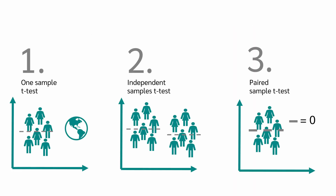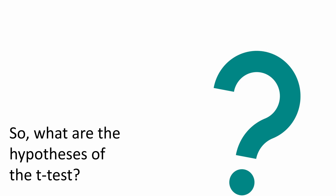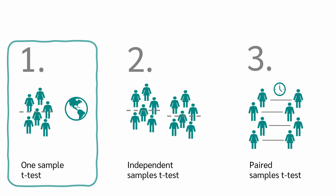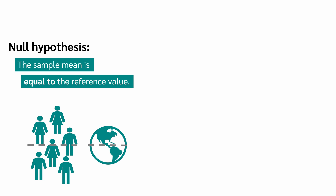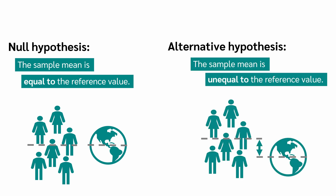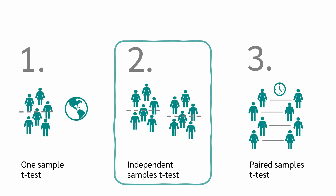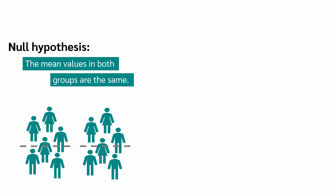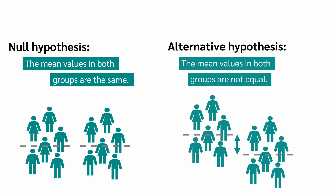In the case of an independent t-test, the variances in the two groups must also be approximately equal. You can check whether the variances are equal using Levene's test. Now, what are the hypotheses of the t-test? In the one-sample t-test, the null hypothesis is that the sample mean is equal to the given reference value — so there is no difference. The alternative hypothesis is that the sample mean is not equal to the given reference value. In the independent t-test, the null hypothesis is that the mean values in both groups are the same, meaning there is no difference between the two groups. The alternative hypothesis is that the mean values in both groups are not equal.